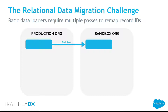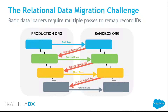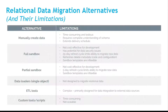What if you tried to do this with a data loader? You'd have to move the data one step at a time, and you'd have to remap the IDs from the destination org to the child object parent IDs, then keep going back and forth. If you had 40 objects, you'd have to go back and forth 40 times. There's no really good way around it. This takes hours, days if you're talking about CPQ, and it burns a lot of brain cells — time better spent doing coding.